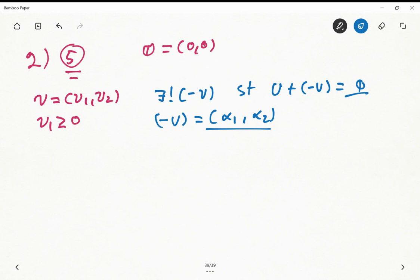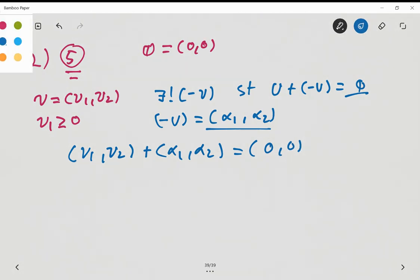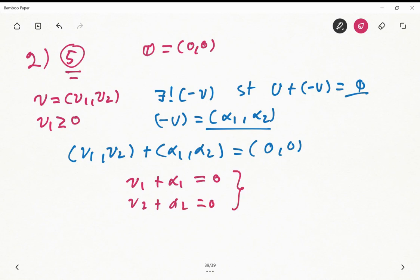What happens here is that we need (u1, u2) plus (α1, α2) to equal (0,0). This gives us a system of equations: u1 + α1 = 0 and u2 + α2 = 0. From this we obtain the solution.